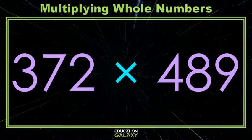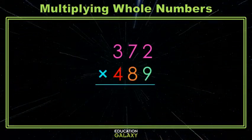We'd prefer to write that vertically, lining up our place values. We start with multiplying the 372 by the 9, the 1's place. So 2 times 9 is 18, carry the 1.